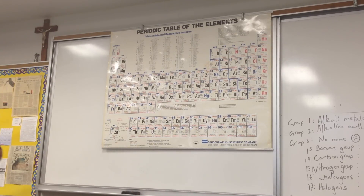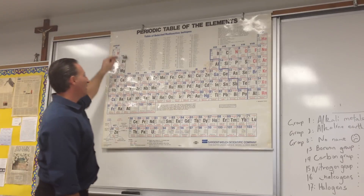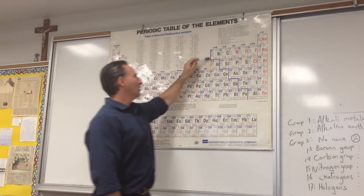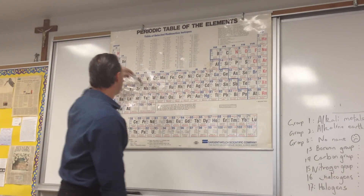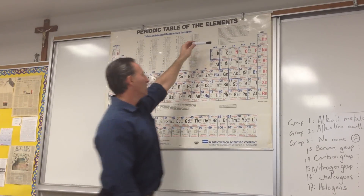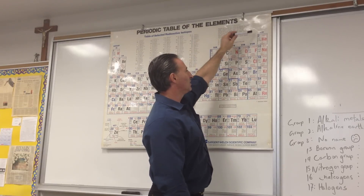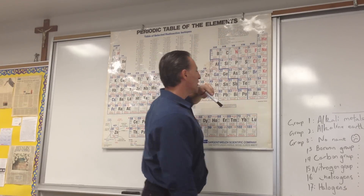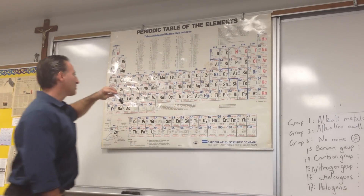There are 18 groups in the periodic table. They go from 1 to 18 all the way across — group 1, group 2, 3 through 12, 13, 14, 15, 16, 17, and 18. A lot of the groups have names.